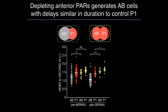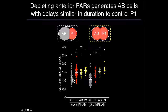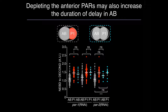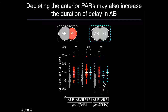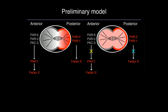Using this size-corrected framework to interpret our PAR knockdowns: when we deplete anterior PAR proteins PAR6 or PKC3, P1 cells don't change much in the duration of their delay, whereas AB cells are delaying with timing comparable to a similarly sized P1 cell and significantly longer than a similarly sized AB cell — fitting the model. When we deplete posterior PAR proteins PAR1 or PAR2, P1 is relatively unaffected, while AB cells show either an intermediate phenotype or tend towards longer delays relative to their size. We need to explain why knocking down posterior and anterior PAR proteins gives a similar phenotype in our case.